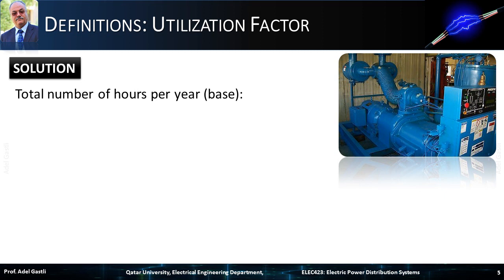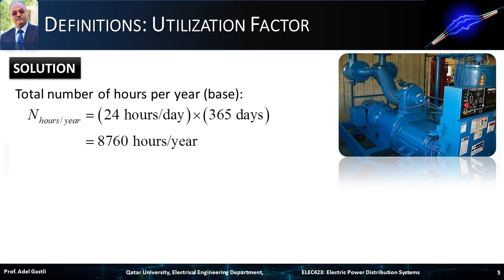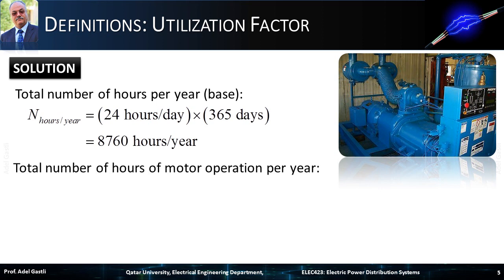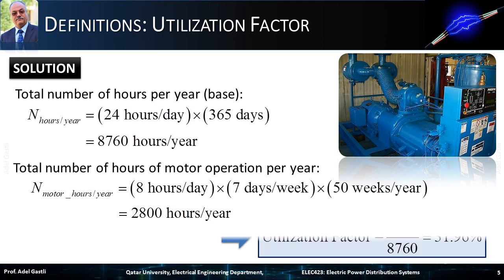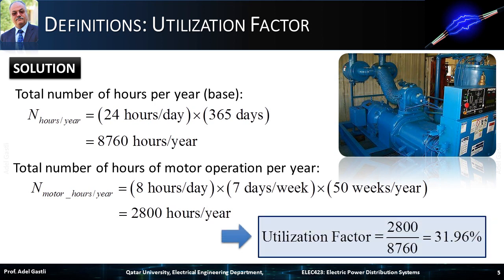To calculate the motor utilization or use factor on a yearly basis, we first determine the total number of hours in one year: 24 hours per day times approximately 365 days per year equals 8760 hours per year. The motor operates only 8 hours per day during 50 weeks of the year, so the total hours of motor operation per year is 8 hours per day times 7 days per week times 50 weeks, which is 2800 hours per year. Therefore, the utilization factor is 2800 divided by 8760, which equals 31.96%, meaning the motor is utilized on average only 31.96% of the total base time.